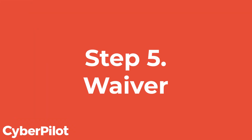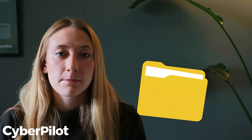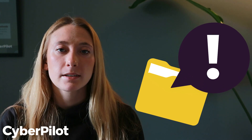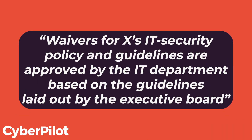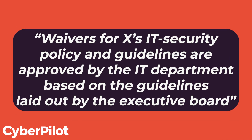Step five: waiver. This is a short but important step. Waivers are exceptions where responsibilities and objectives are not applicable. If you don't have any clear exceptions, you can formulate a statement such as: 'Waivers for X's information security policy and guidelines are approved by the IT department based on the guidelines laid out by the executive board.'